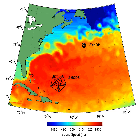Generally, ocean currents, typically 10 cm per second, have a much smaller effect on travel times than sound speed variations, typically 5 m per second. So, one-way tomography measures temperature to good approximation.